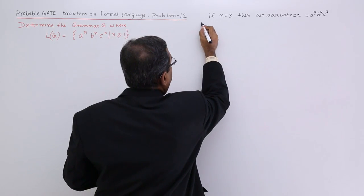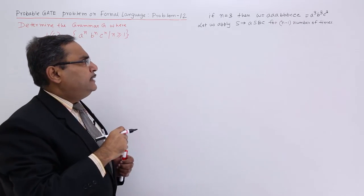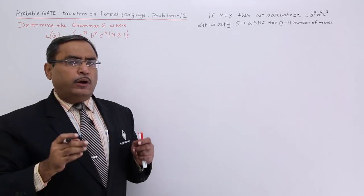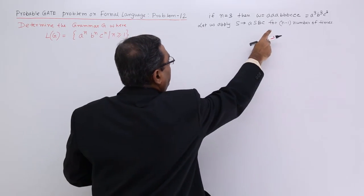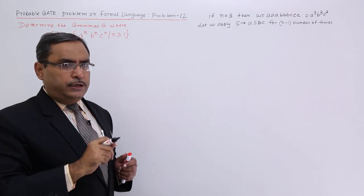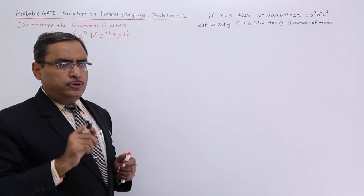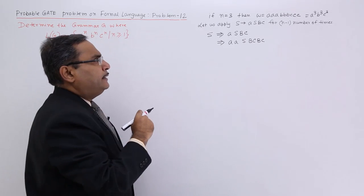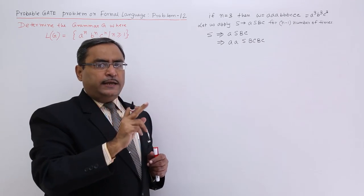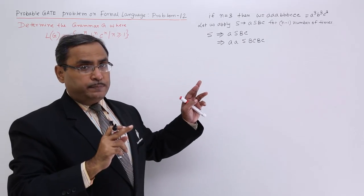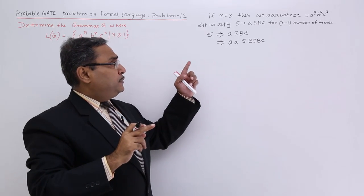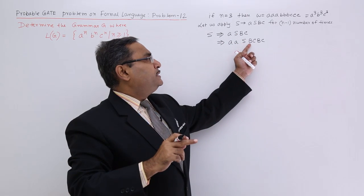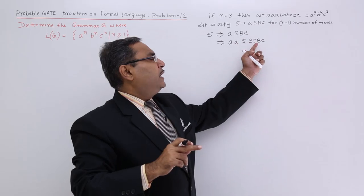Let us apply S → ASBC for N minus 1 number of times. Here the value of N is equal to 3, so N minus 1 will be equal to 2. If you apply S → ASBC — note that B and C here are capital letters — then S will produce ASBC, and this S can be replaced again by ASBC. So this A is this one, and this B, C is this one.